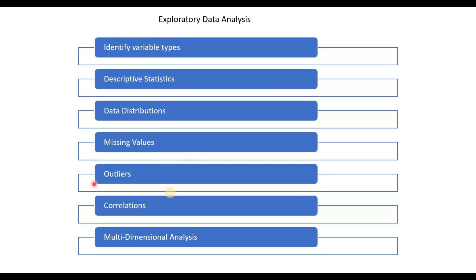Next is outliers. This step helps you identify extremely large or extremely small values in your data that may appear anomalous. At times, these can be a misrepresentation of your data, or they can indicate critical conditions that need to be analyzed further. So outliers have to be examined very closely.